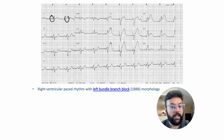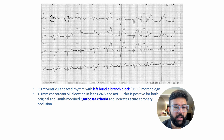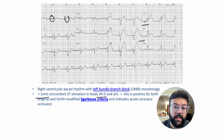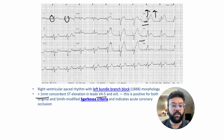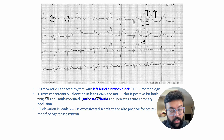If a patient already has left bundle branch block, how do you diagnose MI? You use Sgarboza's criteria. Here you see more than one millimeter of concordant ST elevation in V4 and V5 — the QRS complex and the ST elevation are in the same direction — which is equivalent to STEMI. You can also see discordant ST depression changes in V2 and V3.